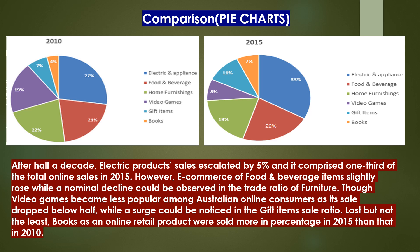After half a decade, electric product sales escalated by 5% and comprised one-third of the total online sales in 2015. However, e-commerce of food and beverage items slightly rose while a nominal decline could be observed in the trade ratio of furniture. Video games became less popular among Australian online consumers as their sale dropped below half, while a surge could be noticed in the gift item sale ratio. Last but not least, books as an online retail product were sold more in percentage in 2015 than in 2010.